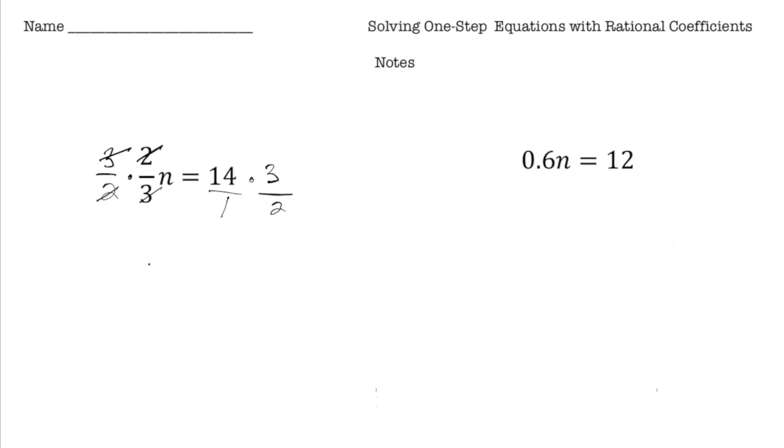So now all that's left is n equals. And then 14 times three halves. I can cross-reduce the 14 and the 2. I can make this a 7 and make this a 1. And then finally, 7 times 3 is 21. So that's our solution.